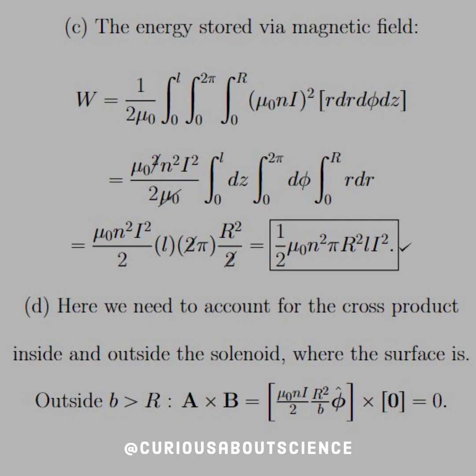The next method is probably the most gruesome, so we're going to take it a little step by step. Here we need to account for the cross product inside and outside the solenoid, where the surface is. Alright, so outside we see that B is greater than R, and A cross B is equal to zero. That's lovely, because the field outside is zero. So the vector potential is taking a cross product with a zero component vector. We like that, easy to deal with.